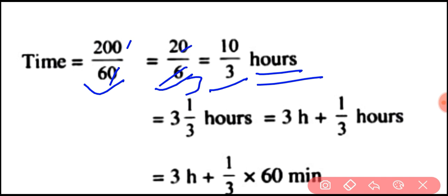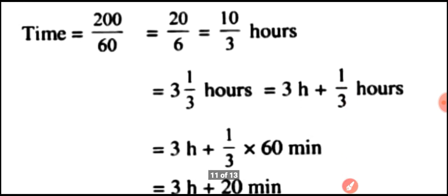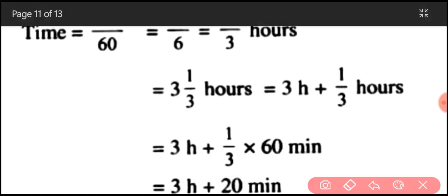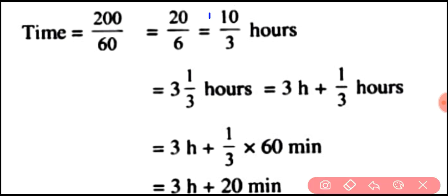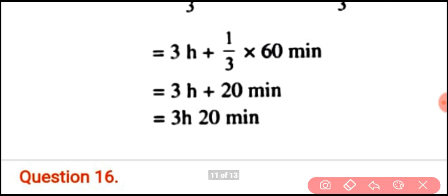Time is 10/3 hours. Converting this to a mixed fraction: 3 and 1/3 hours, which equals 3 hours plus 1/3 hour. Since 1/3 hour = (1/3) × 60 minutes = 20 minutes, the final answer is 3 hours 20 minutes.